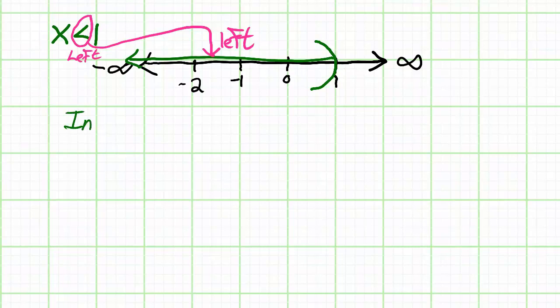That's just my personal preference. Now the interval will look very much the same as the graph. Negative infinity will be on the left and 1 will be on the right.